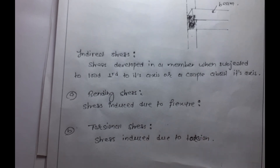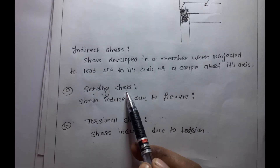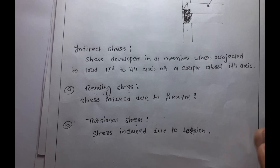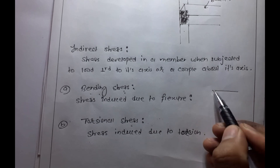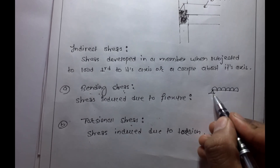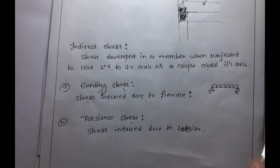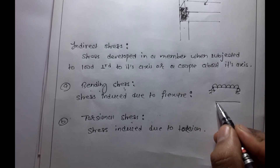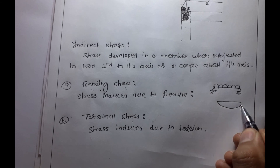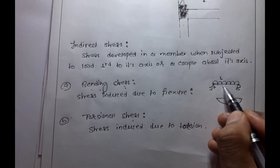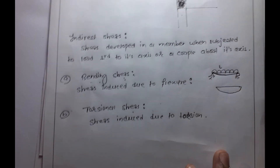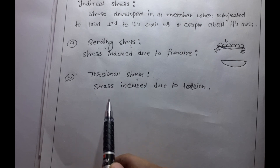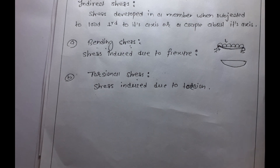Indirect stress includes bending stress and torsional stress. Bending stress is induced due to flexure — for example, a beam under a uniformly distributed load (UDL) develops a bending moment, and the resulting stress is bending stress. The second type of indirect stress is torsional stress, which is induced due to torsion.